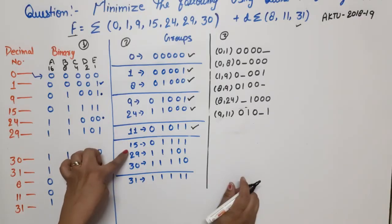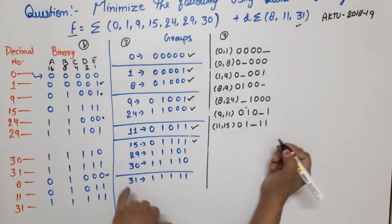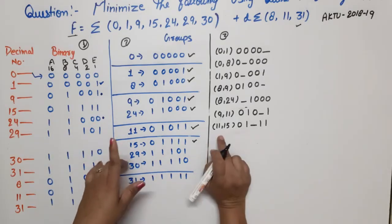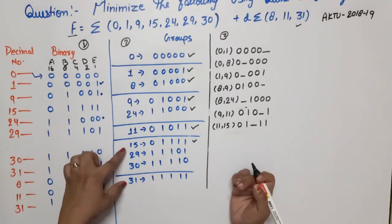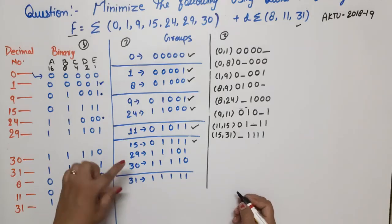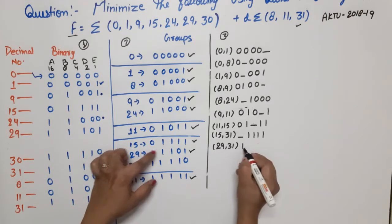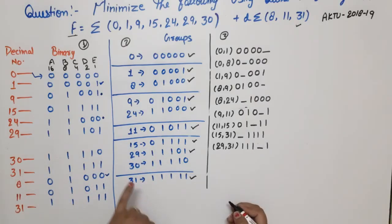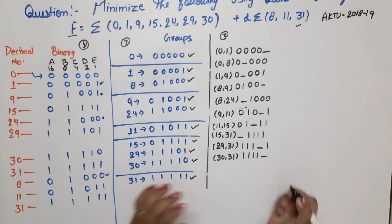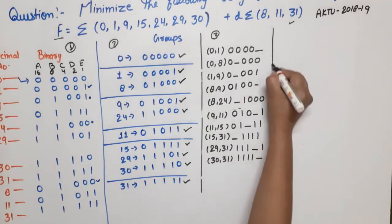Minterms 11 and 15 — difference is 4 = 2^2, possible. Result: 11,15 → 01-11, third bit changes. Minterms 11 and 29 — difference is 18, not possible. Minterms 11 and 30 — difference is 19, not possible. Comparing group 4 with group 5: minterms 15 and 31 — difference is 16 = 2^4, possible. Result: 15,31 → -1111, first bit changes. Minterms 29 and 31 — difference is 2 = 2^1, possible. Result: 29,31 → 111-1, fourth bit changes. Minterms 30 and 31 — difference is 1 = 2^0, possible. Result: 30,31 → 1111-, last bit changes. This completes our first reduction.